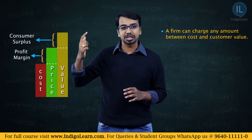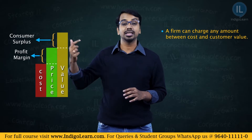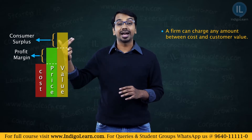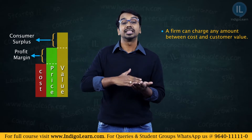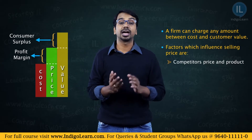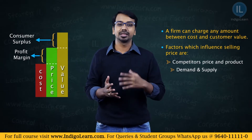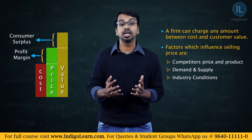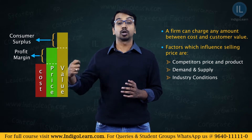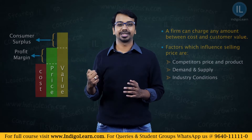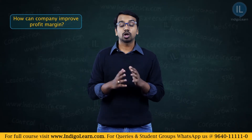A firm can charge anywhere between the cost and the customer value. In that range it can charge any price — a higher price means higher profits, a lower price means lesser profit. To decide the price, other factors come into picture: what is the competition charging, what is the competition offering, demand and supply, industry conditions. The firm arrives at a price which is less than the value per customer but more than the cost of value creation.